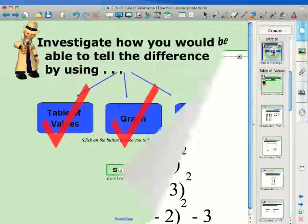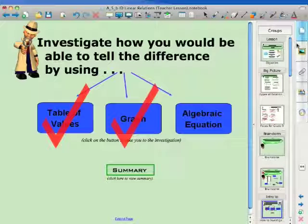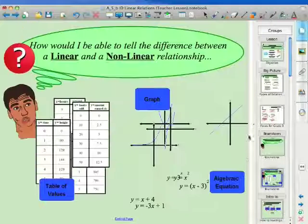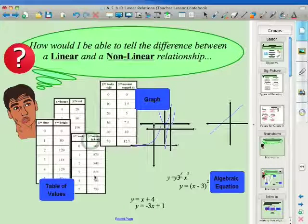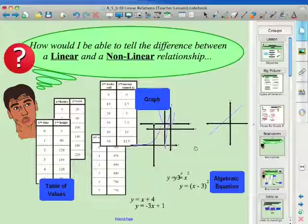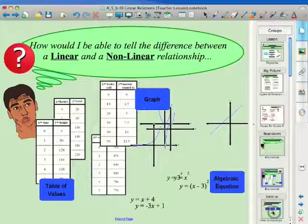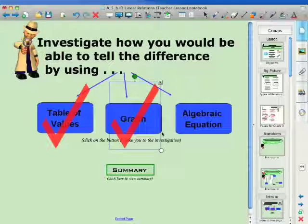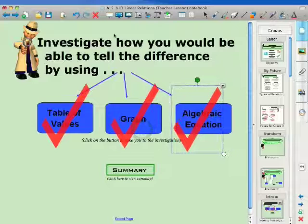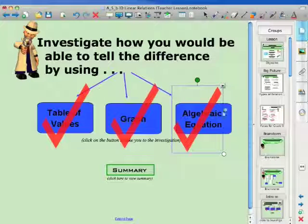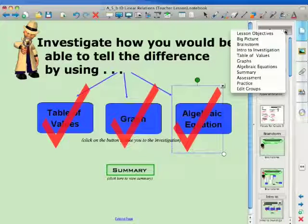Once I've felt that they've understood the concept, I can go back and refer to the beginning of the lesson, where we did our brainstorm and discussed the differences. And what we talked about now, we should be able to tell the difference of linear and non-linears just by looking at either table of values, graphs, and equations. And so that concludes all three investigations of investigating how you would tell the difference between a linear and a non-linear, whether you have a table of values, graph, or equation.